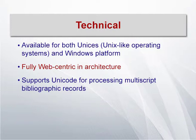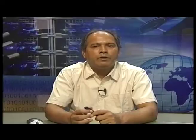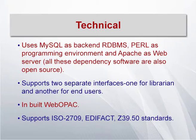Koha is fully web-centric in architecture. You do not need to install a separate web suite to offer your OPAC over the web — unlike Soul, which does not come with ready web OPAC support and requires a separate module. In Koha, all library-related activities through the staff interface can be done over the web. Users can search the OPAC through the web, and various interactive features are available. From the beginning it supports Unicode for processing multiscript bibliographic records.